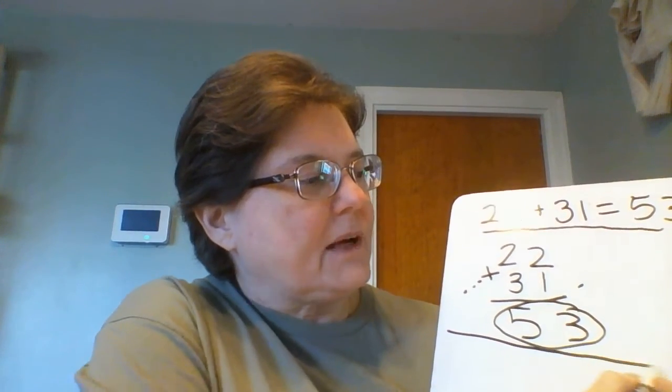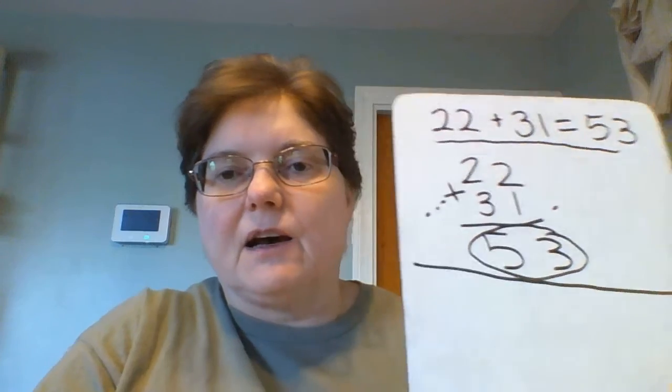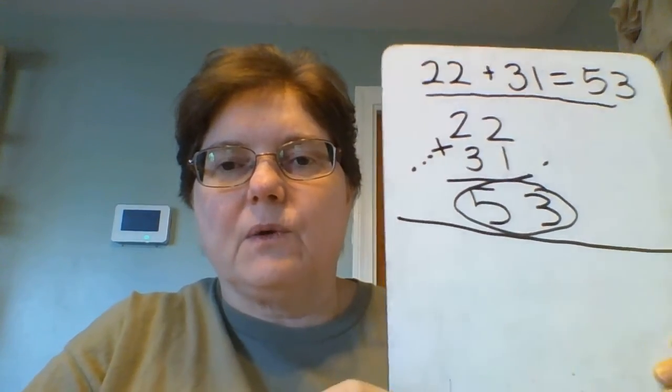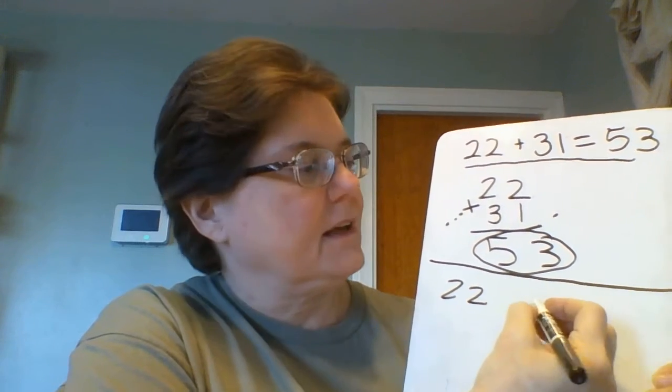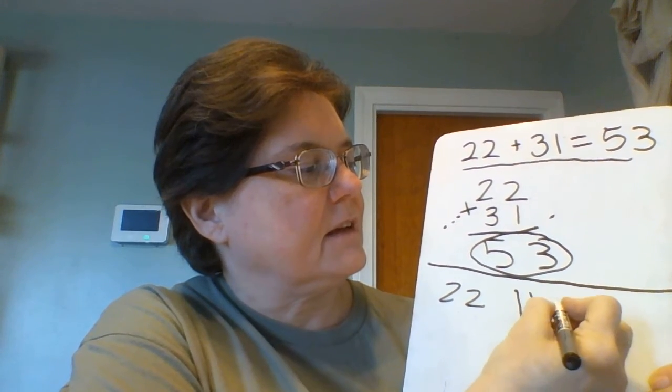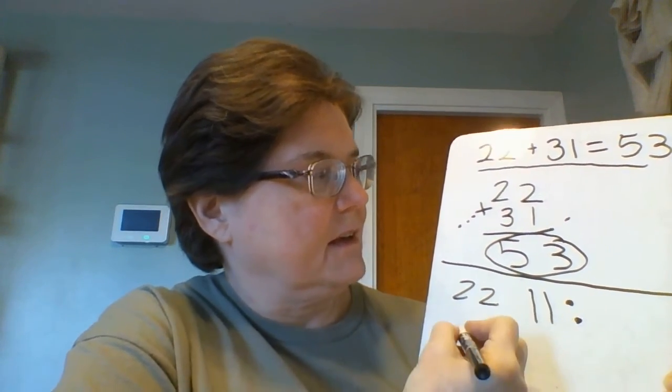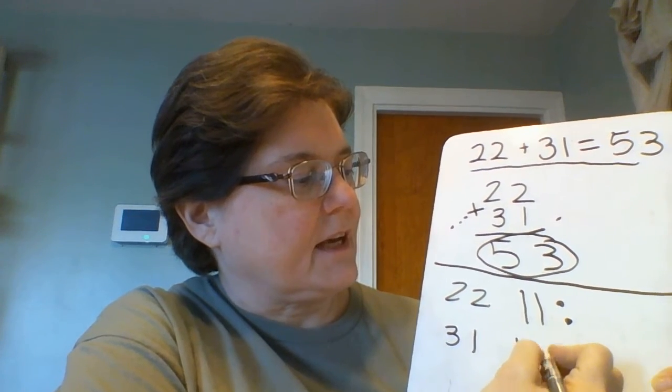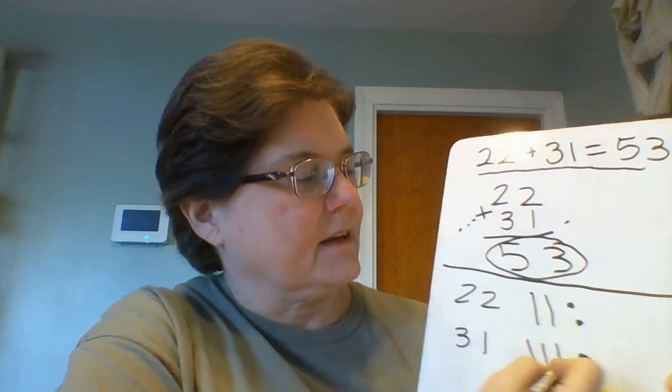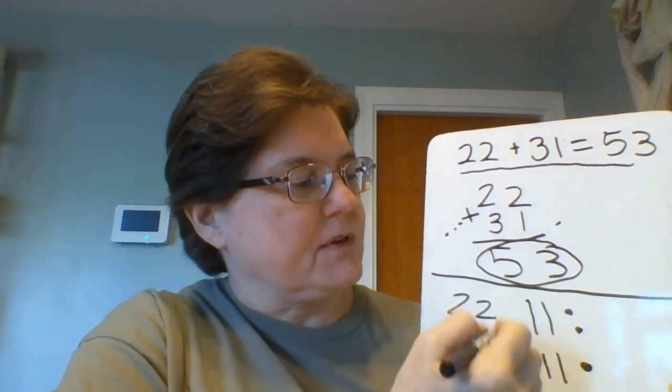Another way to do this, especially if you're having trouble adding those up, is to use tens and ones. 22 is two tens and two ones. 31 is three tens and one one. And then you just count up your tens and ones.